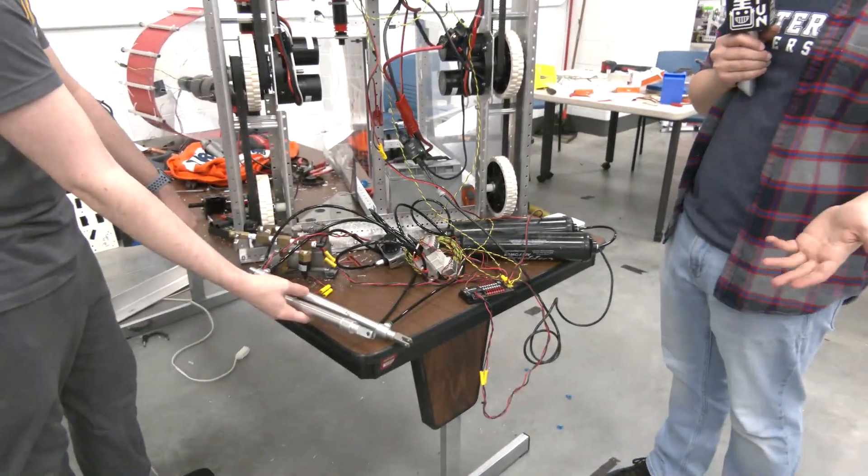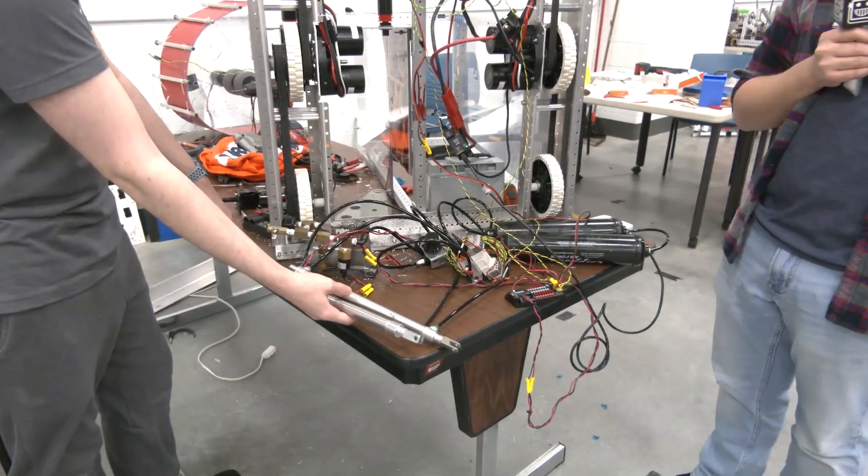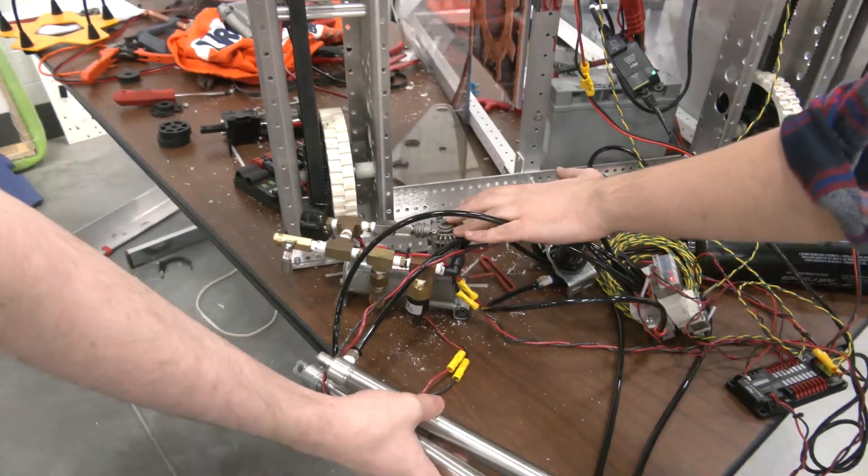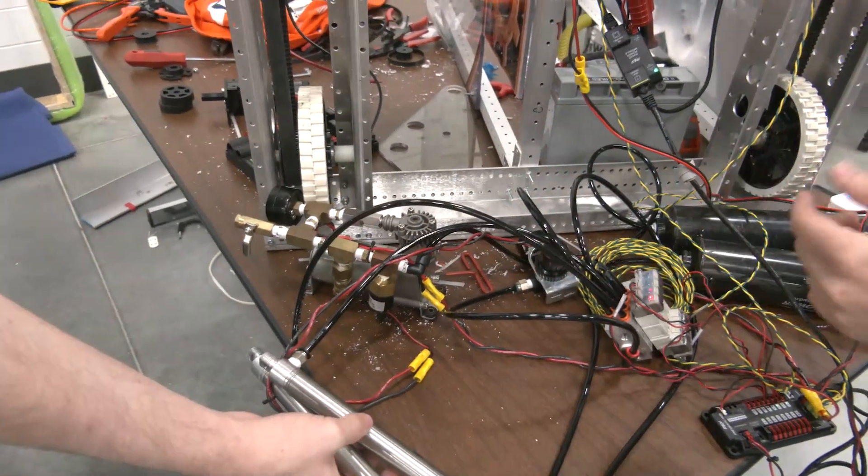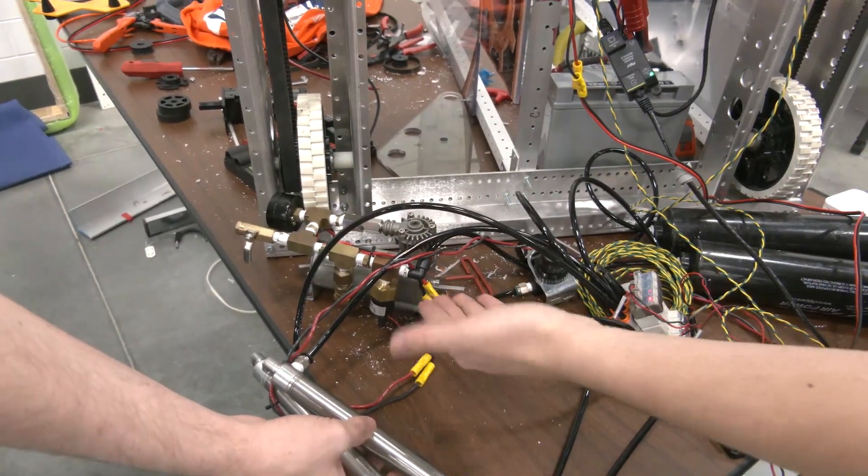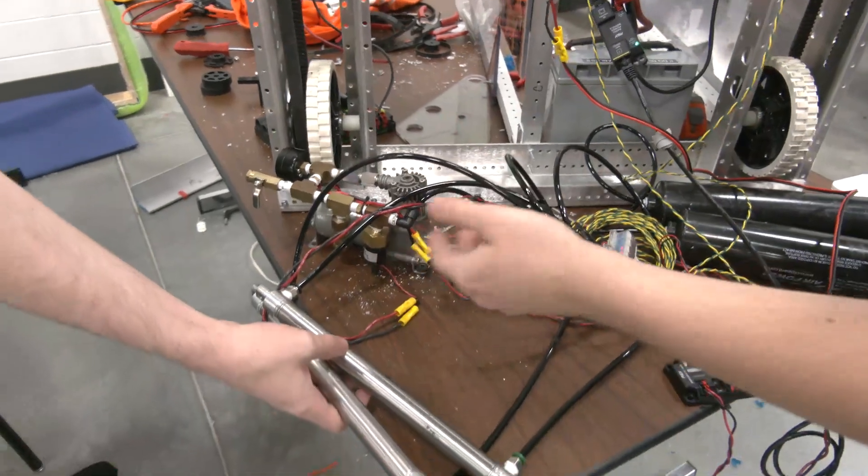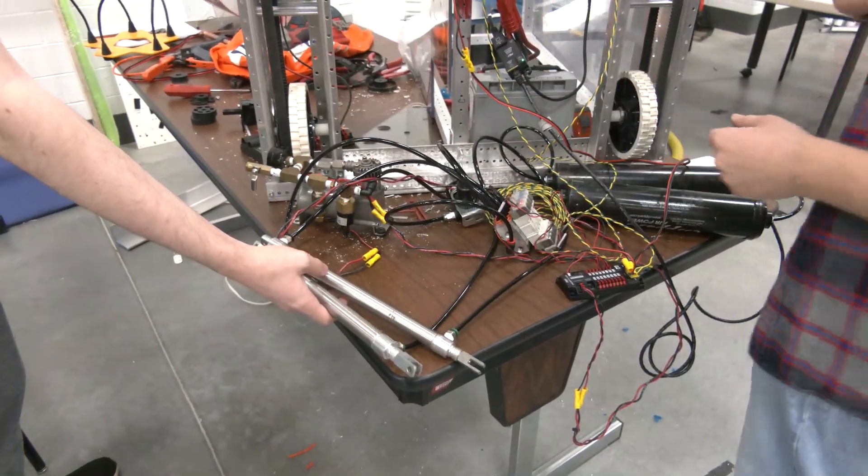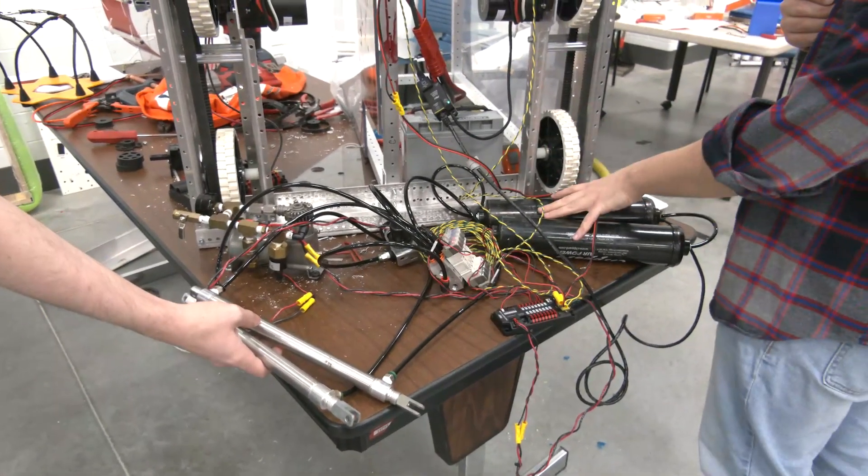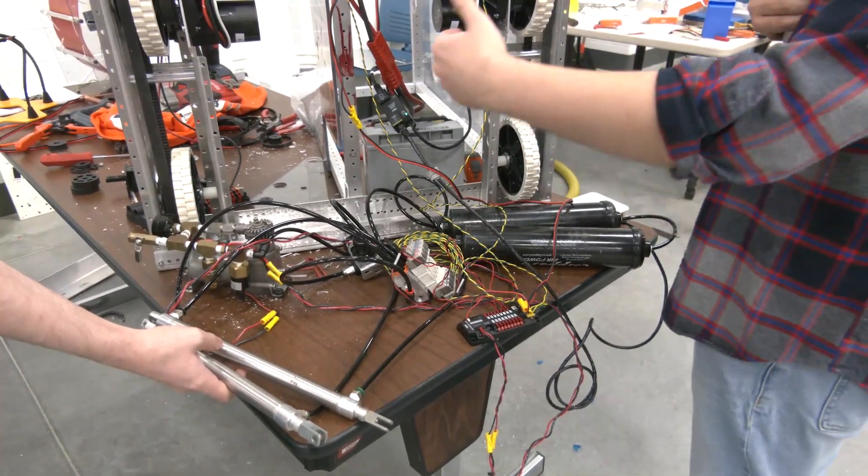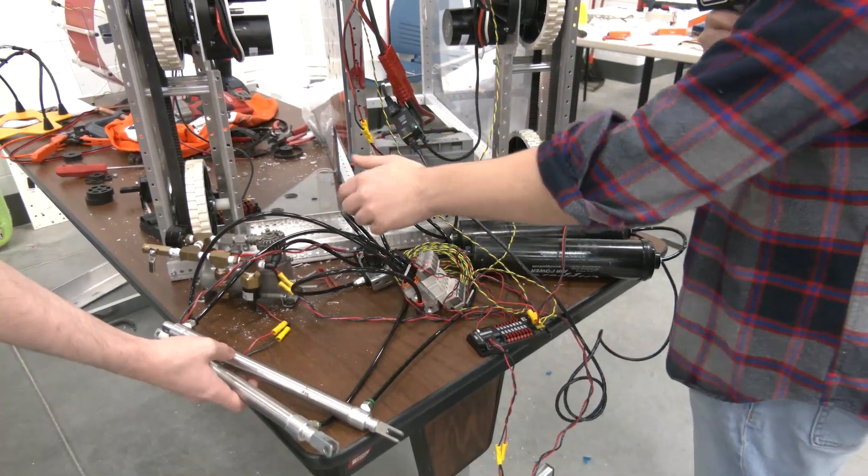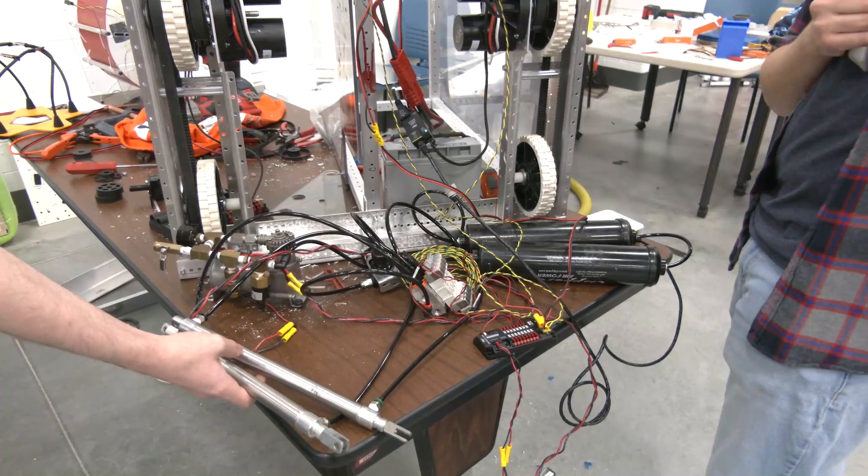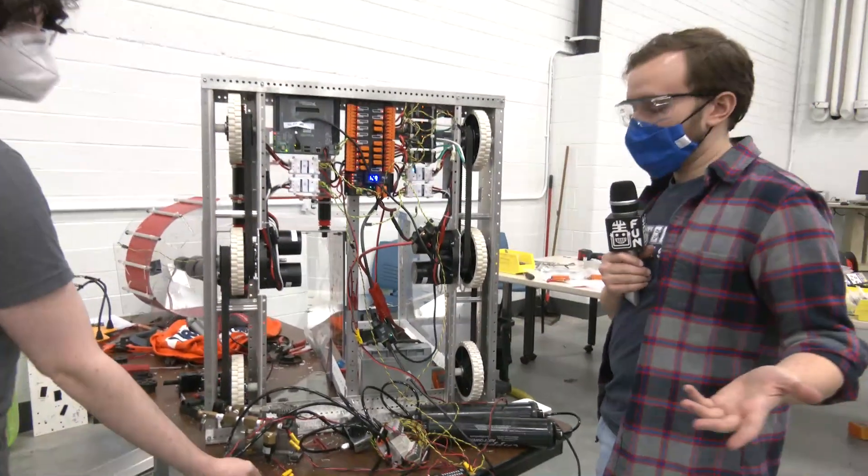We are using mostly typical, fairly standard components in our pneumatic system. We have a very typical compressor that you'll see on most FRC pneumatic systems with all the required regulators and pressure gauges and switches. We are following the FRC rules by storing our pressure in two accumulators at 120 psi, and our work pressure past our regulator in our solenoids and in our cylinders is 60 psi. That is all per strict FRC pneumatic regulations.